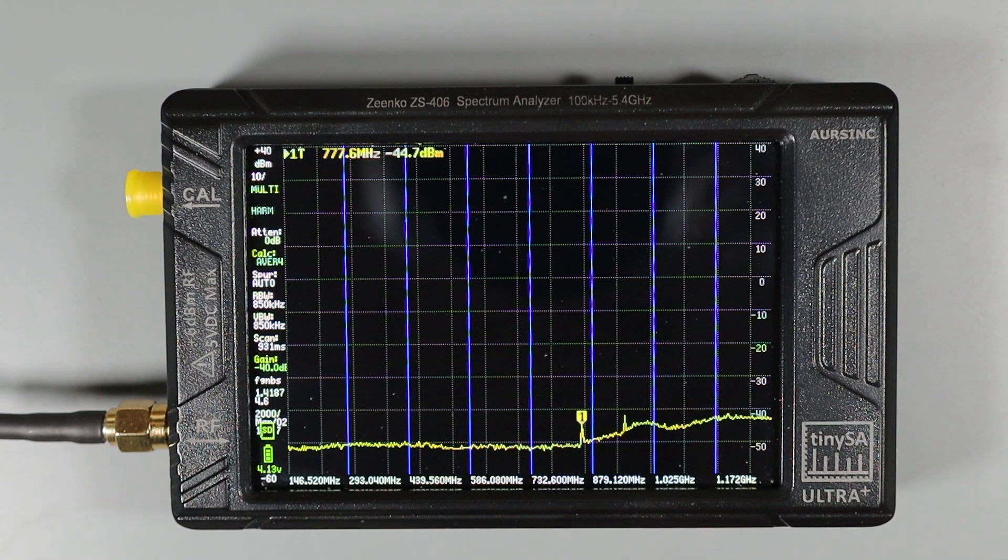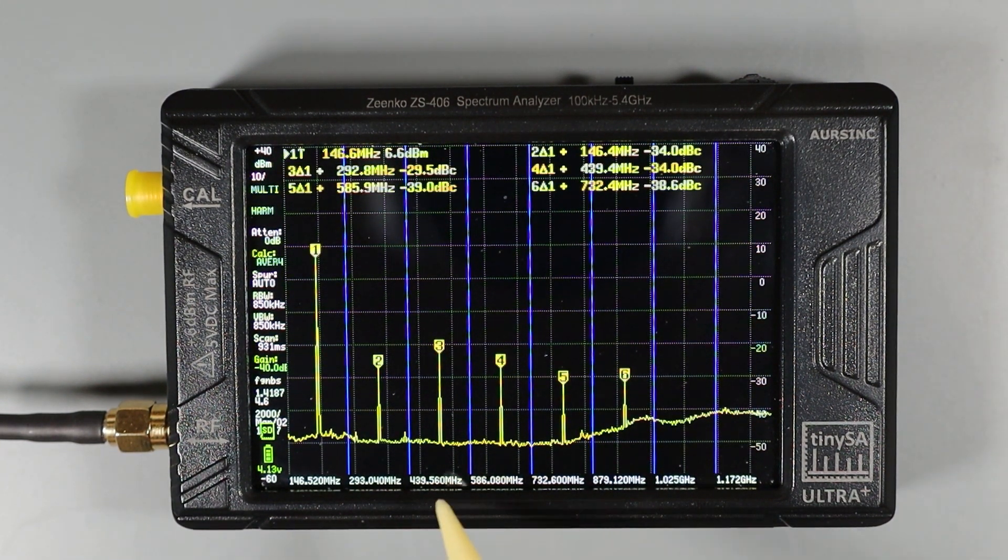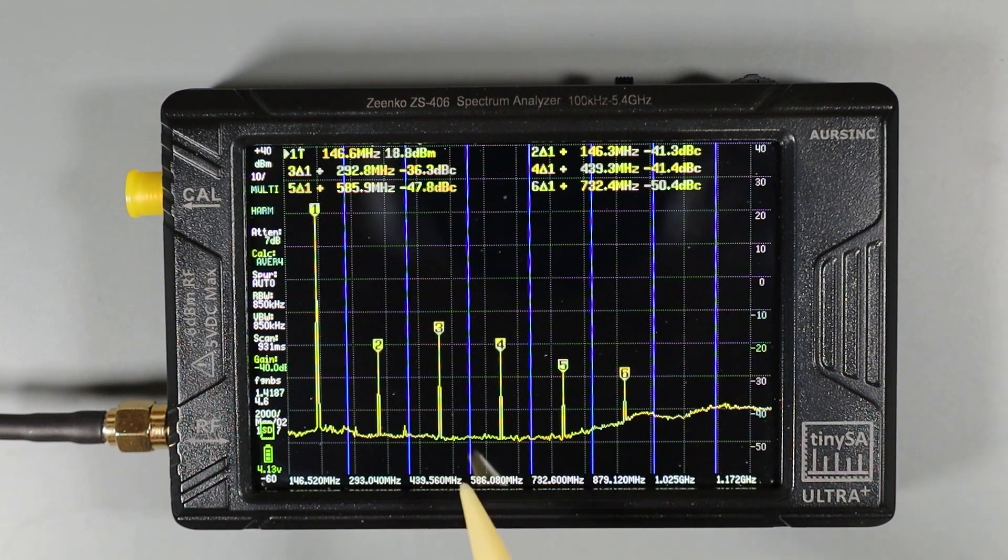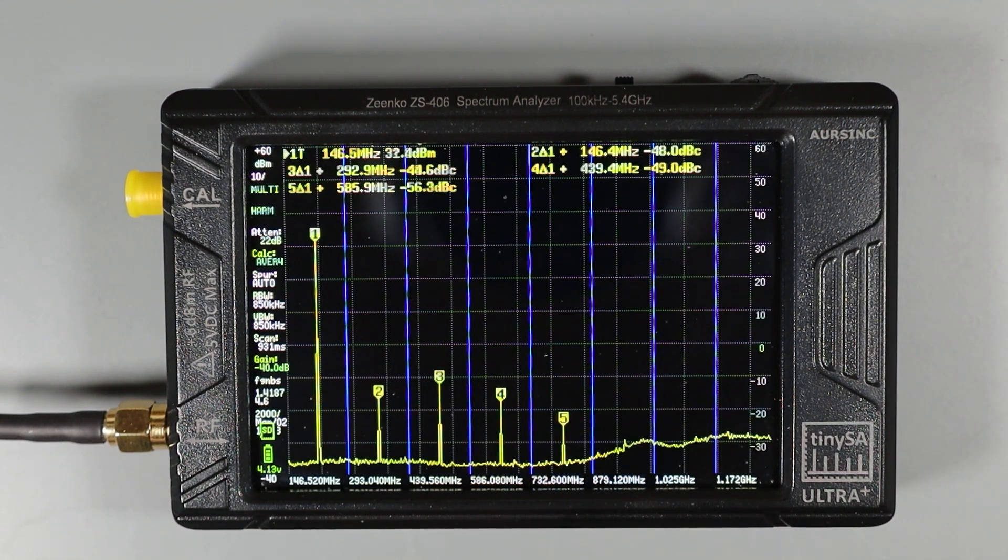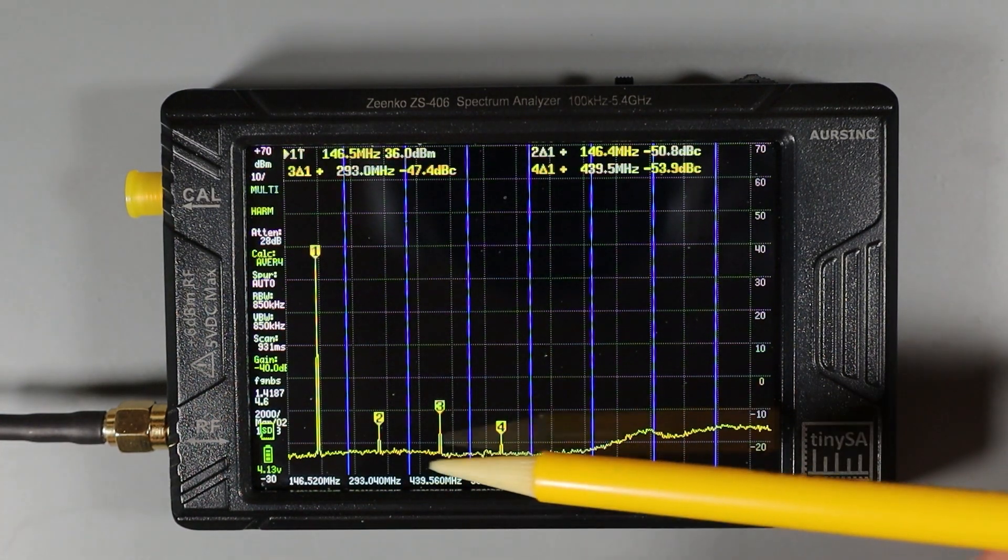So now you can see the test is set and ready to go. We've got our blue lines indicating our harmonic spans, and the spectrum is down here waiting for a signal. So if I key up the radio, it's going to take about 30 seconds or so for the TinySA to settle out and for our measurement to become accurate.